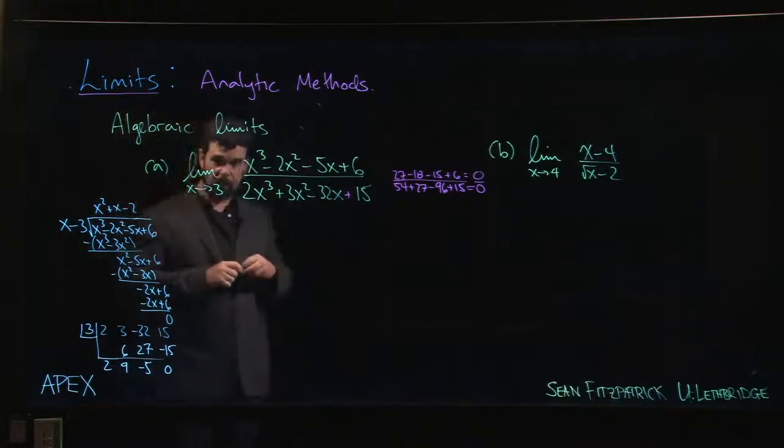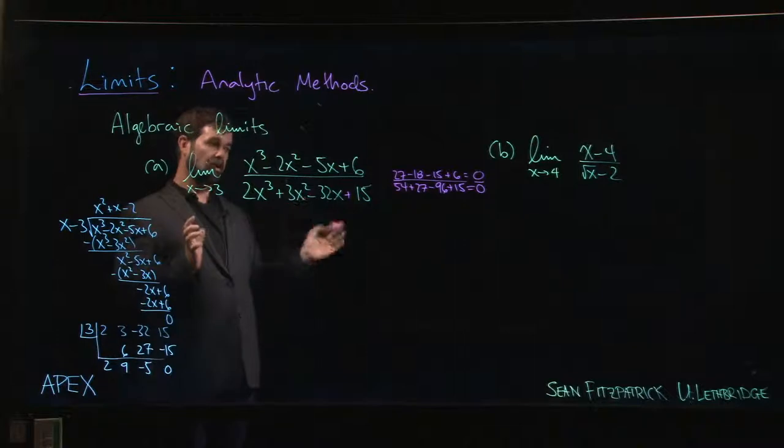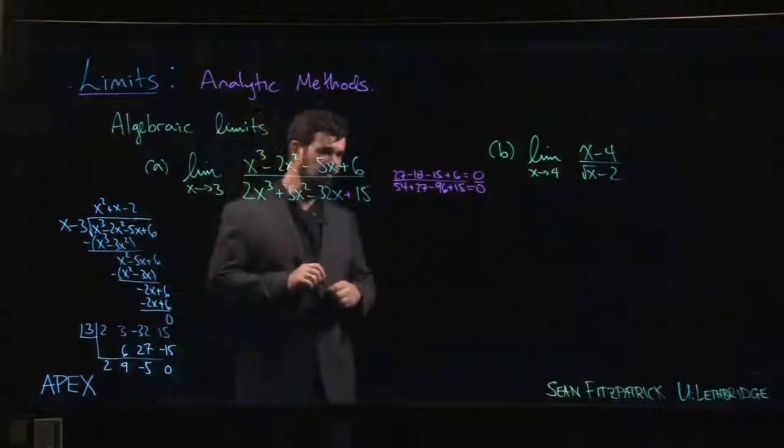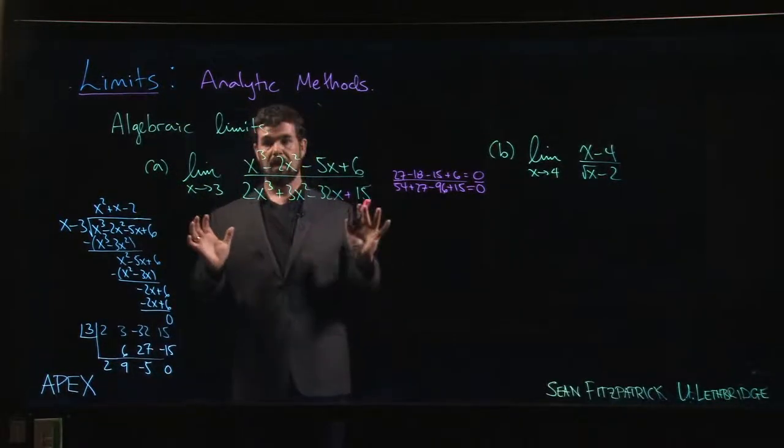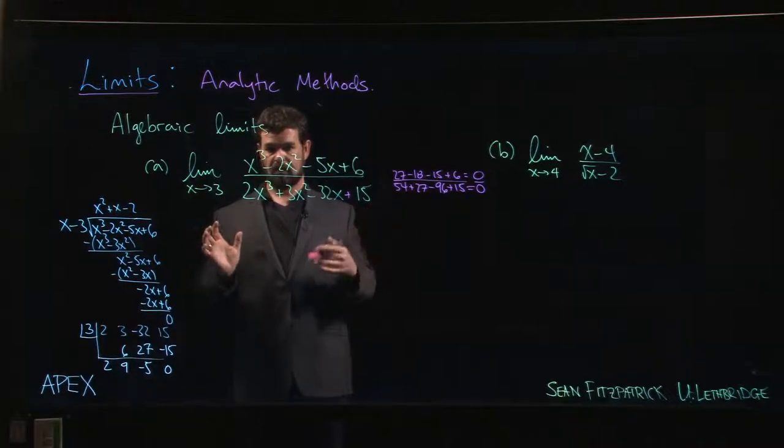Anytime you have a zero over zero limit, this is one of these indeterminate forms. This is a sign that there might be an answer, but you got to do more work before you're going to figure out what it is. Now because we know that numerator and denominator are both zero at 3, that means we know that x minus 3 is a factor, so we try to factor this out.